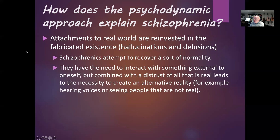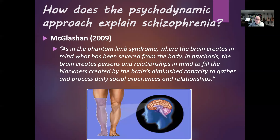Even though the person wants to interact with something outside themselves, because they don't trust what's going on outside them, they end up hearing voices or seeing things that aren't there. McLash (2009) describes this like phantom limb syndrome: just as someone who has had a limb removed still has the sense that the limb is there, someone with psychosis — unable to get in touch with the real world — creates an alternative world for themselves.